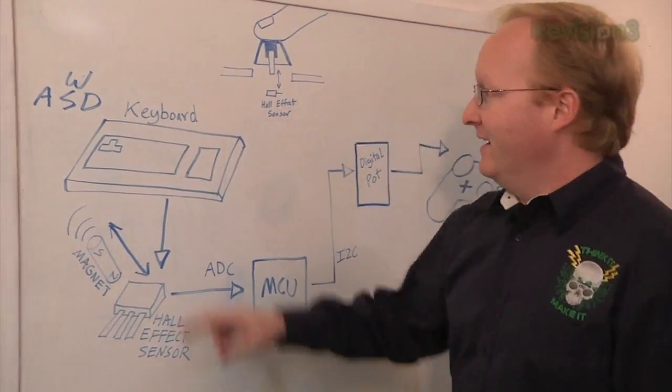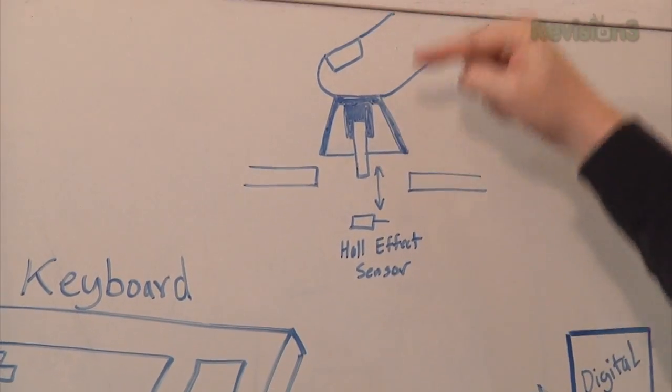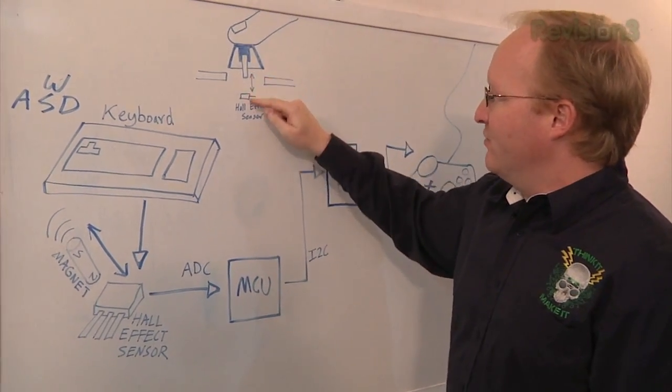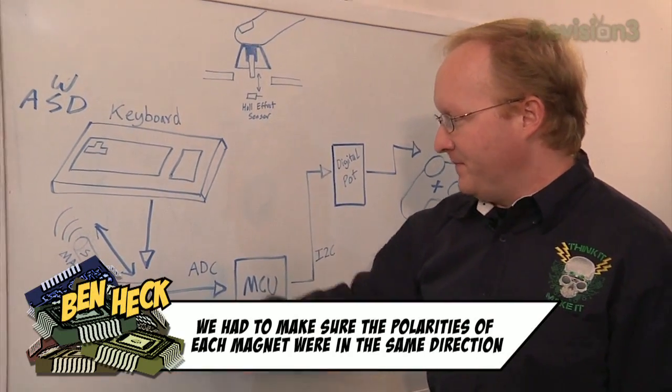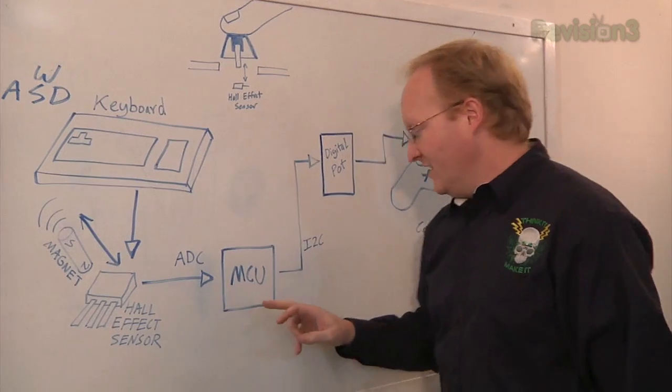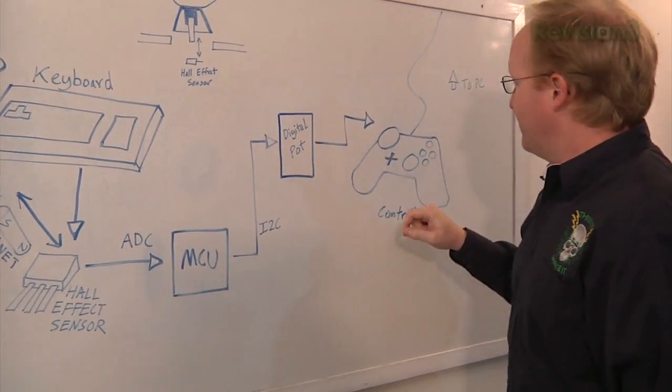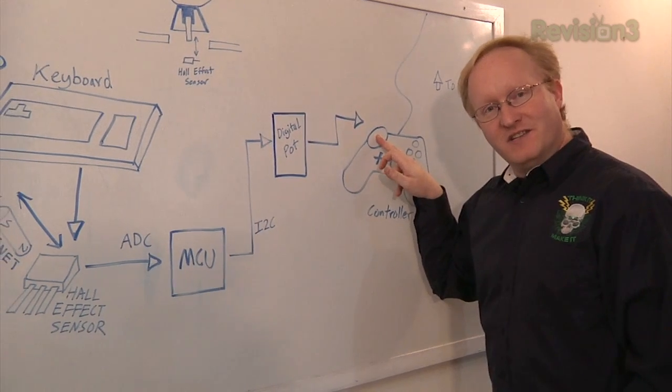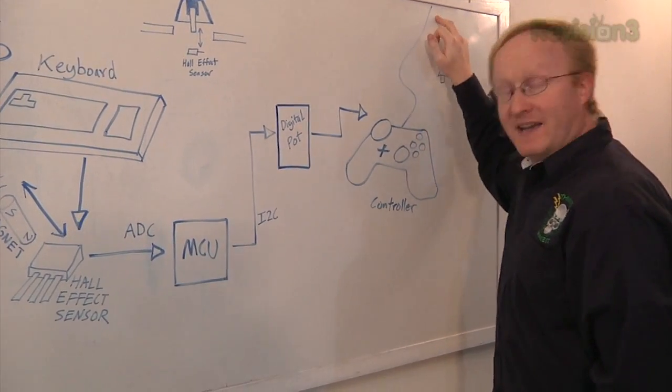Here's my plan of attack. On our keyboard, we're going to have some keys with little rod magnets in them. The rod magnets will be pushed back and forth, and they will affect a Hall Effect Sensor. The Hall Effect Sensor will send its analog value to a microcontroller unit. The microcontroller will send I2C data to a digital pot. The digital pot will simulate one of the analog sticks, specifically the left analog stick on a controller. And then the controller will go back into the PC.